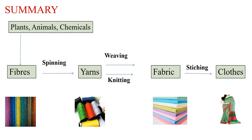This chart summarizes the entire chapter. The fibers which are obtained from plants, animals, or chemicals, after spinning, are converted into yarns. Yarns are converted into fabric by weaving and knitting. And ultimately, fabrics are converted into clothes by stitching. I really hope that now you have learnt all the steps from fiber to fabric.